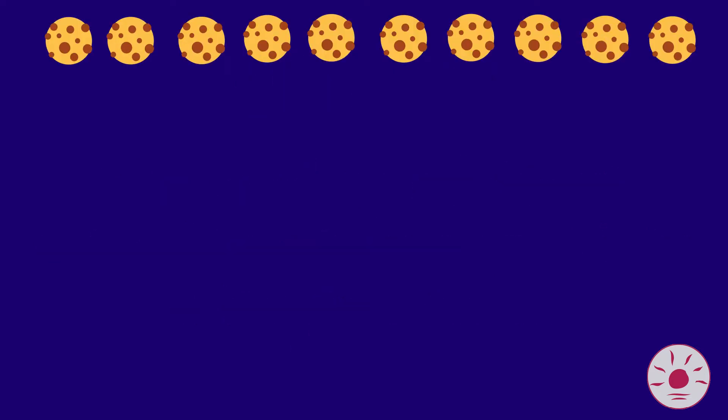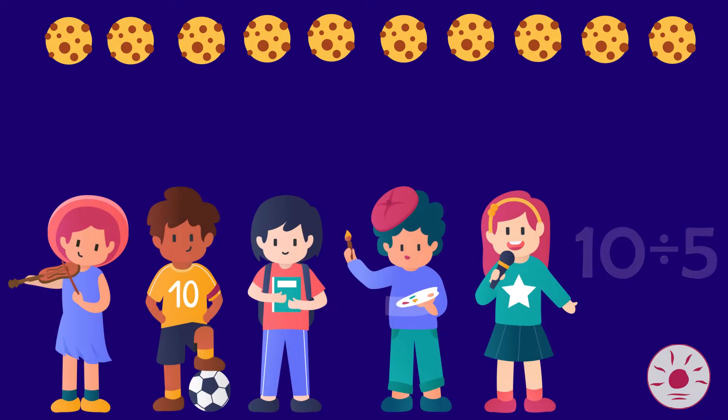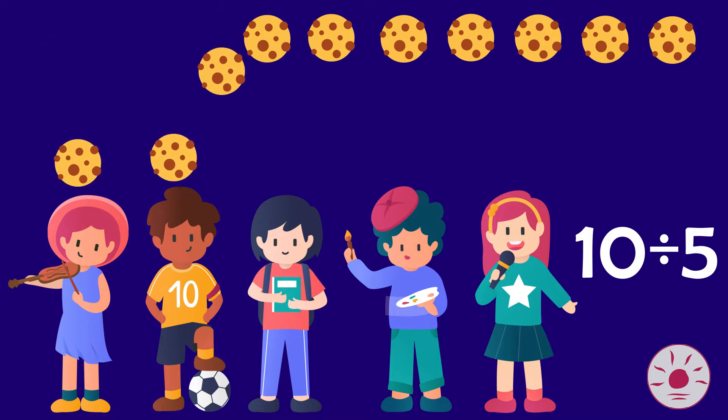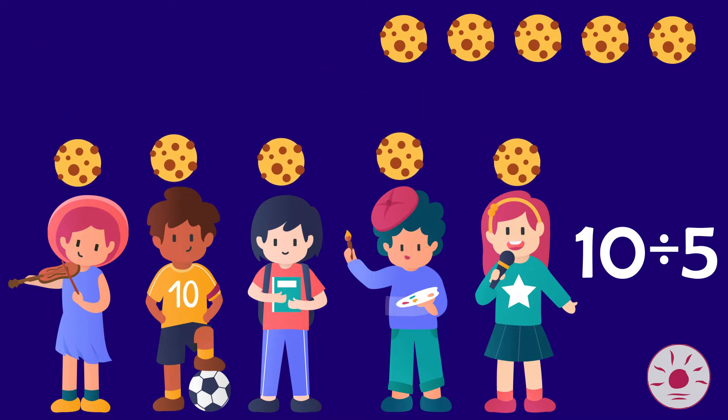Let's pretend you have ten cookies and want to share them between five people. This means you're dividing ten by five, or you want to know how many times the number five goes into the number ten. Let's give each person one cookie. How many cookies do we have left? There are five cookies left. This means you can give each person one more cookie.